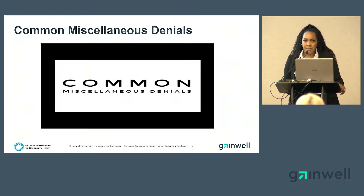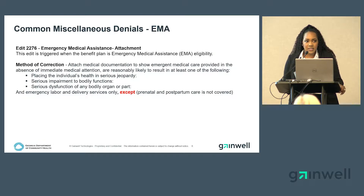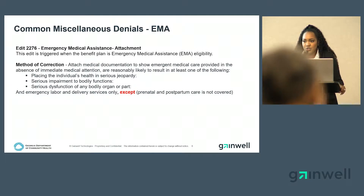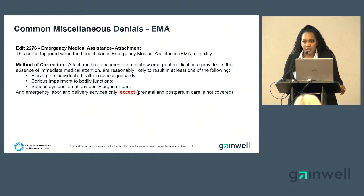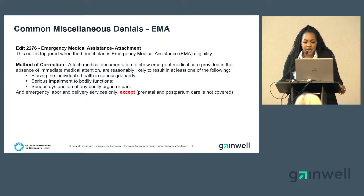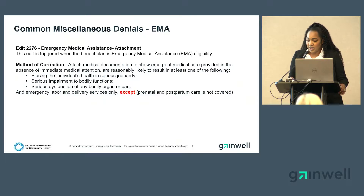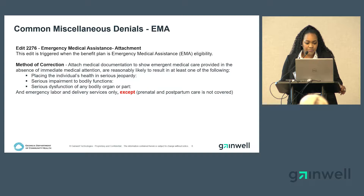Now let's discuss some common miscellaneous denials. The first is edit 2276, the emergency medical assistance attachment. This is triggered when the member's benefit plan is emergency medical assistance eligibility. To correct this edit, you need to attach medical documentation to show urgent medical care provided in the absence of immediate medical attention — care reasonably likely to result in placing the individual's health in serious jeopardy, serious impairment to bodily functions, or serious dysfunction of any bodily organs or parts. This also includes emergency labor and delivery services.